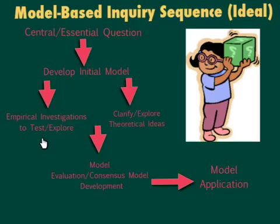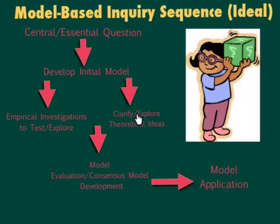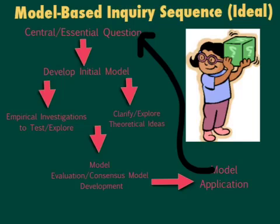Next, the teacher sets up or students come up with their own empirical investigations to explore and test their ideas that go along with that model. They collect data along the way, and also clarify and explore theoretical ideas or second-hand data — the things that other people know. After collecting enough data, the model goes back for evaluation and consensus development within small groups. At any given time, students may go back to either more testing or more research to get an even better consensus model as they complete their task. Eventually, students will get to the point where they can apply that model directly back to the essential question, having not only answered it but applied the best consensus model to answer that particular question.